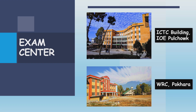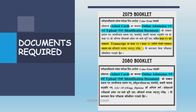This is the routine for IOE entrance. You need to find out the required information and documents. The admit card and the online admission form will be needed as identification documents.